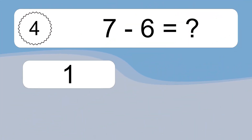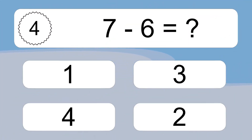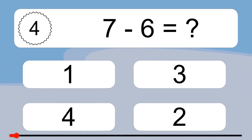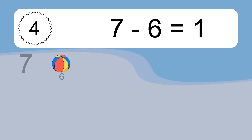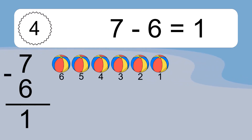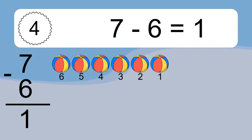7 minus 6 equals what? 7 minus 6 equals 1. Let's count it! 6, 5, 4, 3, 2, 1.